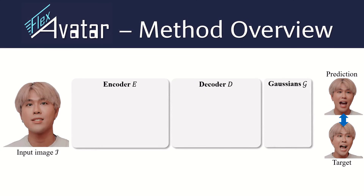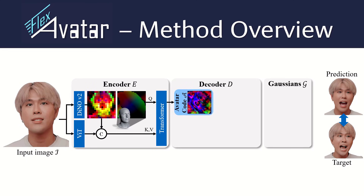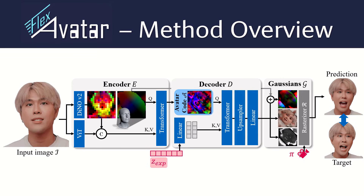Our method adopts an encoder-decoder design. The encoder is inspired by large avatar models and uses cross-attention to embed the image information into a compressed avatar latent space. The decoder models face animation entirely via cross-attention to the sequenced expression code, so our model is not limited by the expression space of a 3DMM. The resulting features are then translated into Gaussian attributes via shallow MLPs and an efficient upsampler architecture.